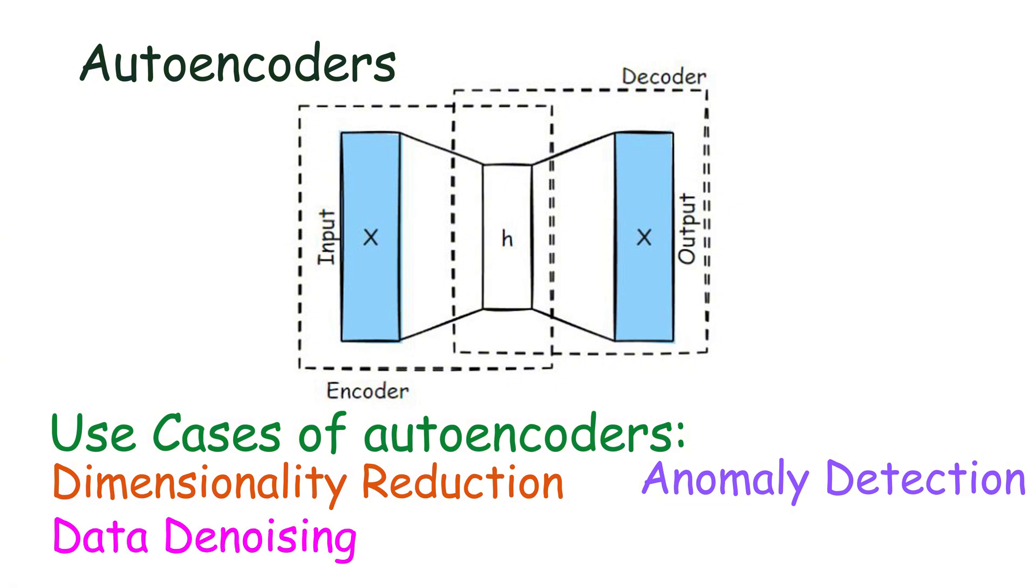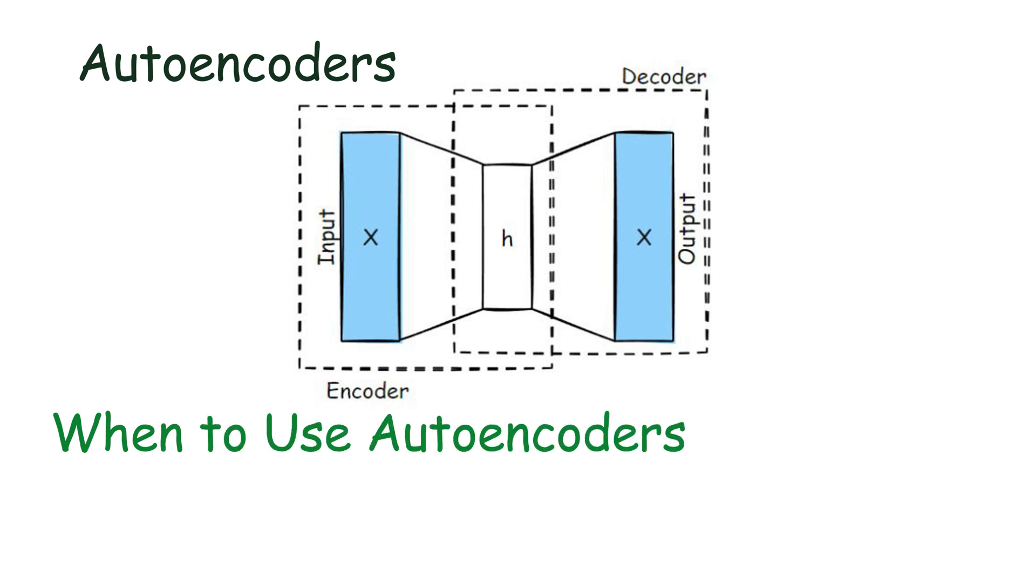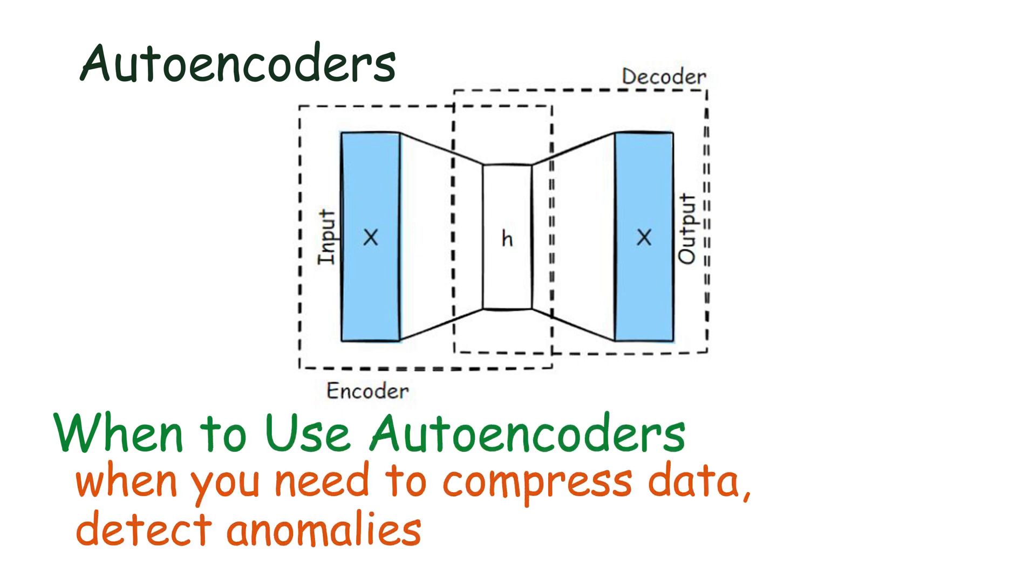When to use autoencoders: Autoencoders are useful when you need to compress data, detect anomalies, or denoise data. They are effective for unsupervised learning tasks where labeled data is not available.